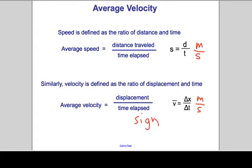And that could be positive, negative, up, down, east, west, north, south, whichever you prefer. So average velocity is sign-specific.